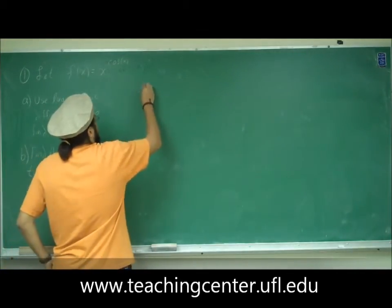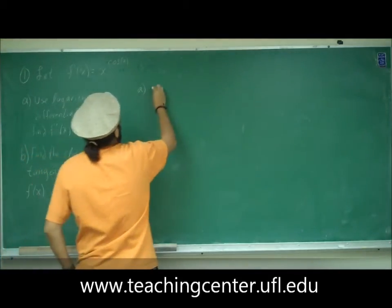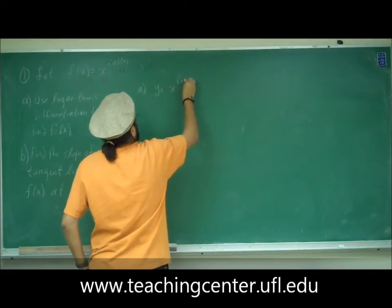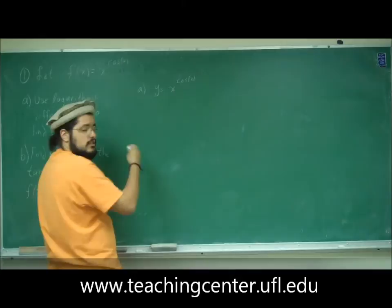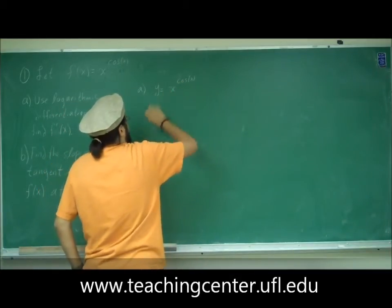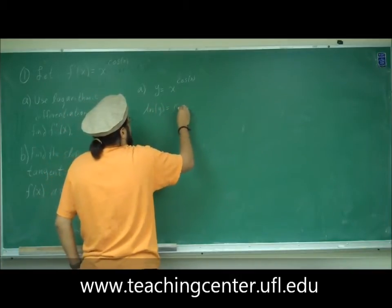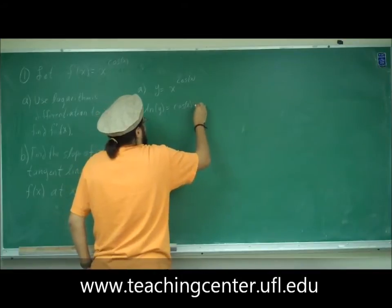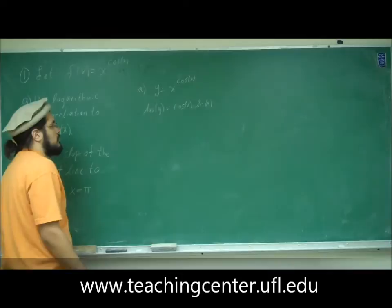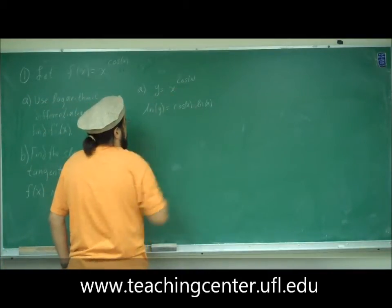So part a. We need to take the derivative of this. What we want to do is, first of all, we know this is y equals x to the cosine x. Now I'm going to introduce log to both sides so I need to get rid of this cosine x and bring it down. So we have ln of y equals cosine x times ln of x. Take ln of both sides and bring the exponent down.